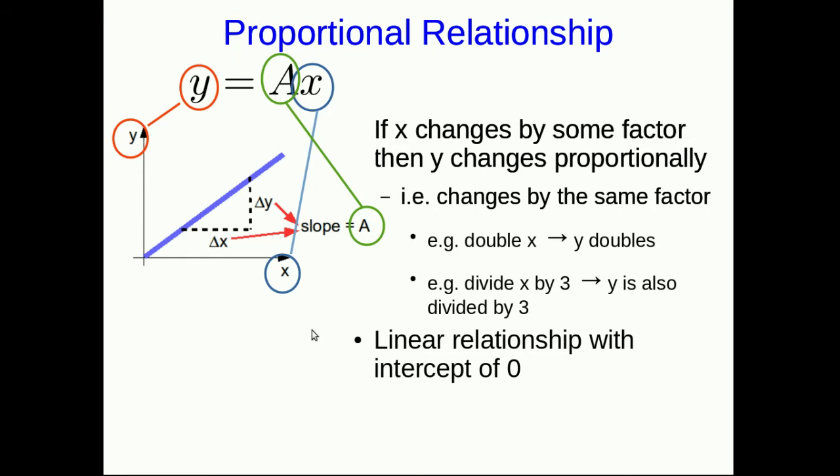And on a graph, it gives you a linear relationship with an intercept of 0. So this equation, y equals ax, is saying that if you put y on your vertical axis and x on your horizontal axis, then you will get a straight line with a slope of a.